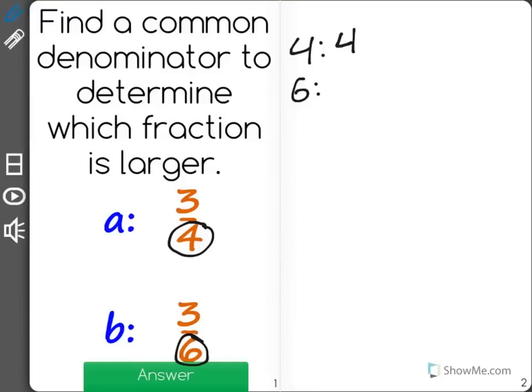So when I count by fours, or I count their multiples, I have 4, 8, 12, 16, 20, and with 6 I have 6, 12, 18, 24.